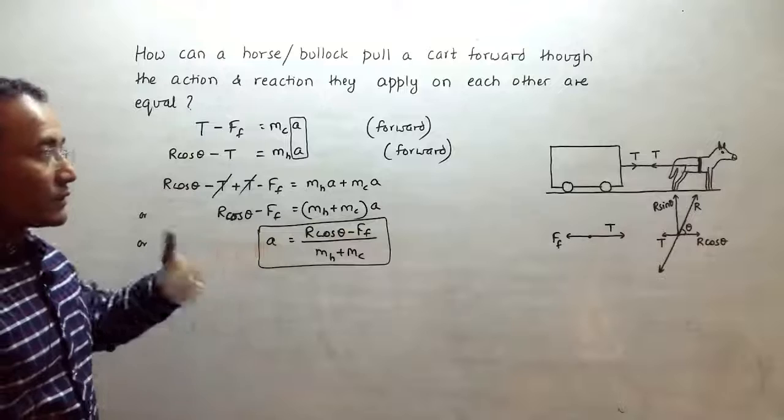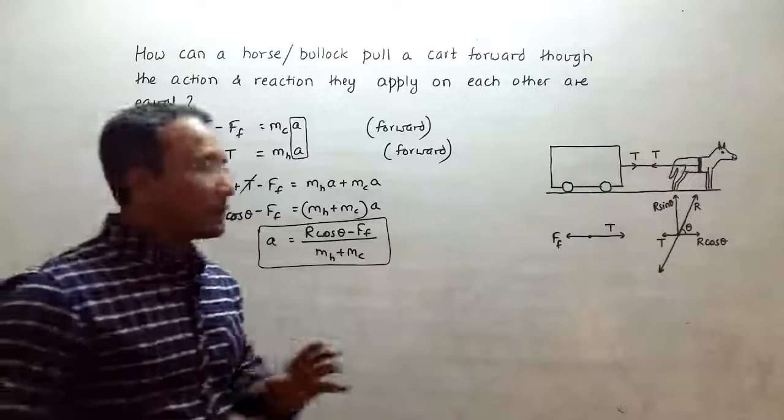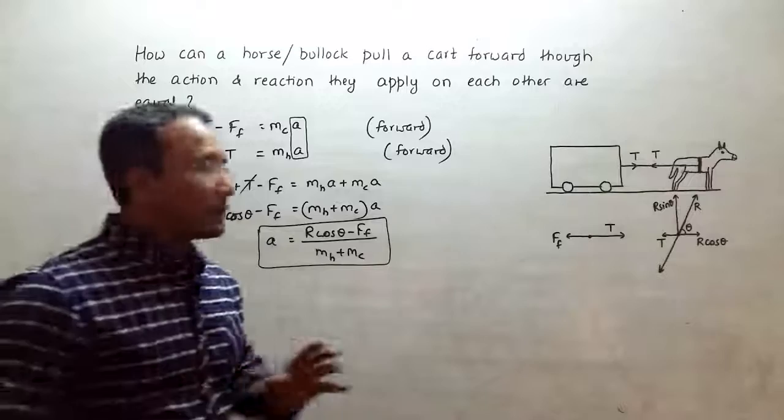So it's not just about action-reaction. Action-reaction is there, but it is in this string—it is applied by force applied by horse on the cart and by the cart on the horse. It's about whether this R cos theta can beat the value of the frictional force or not.